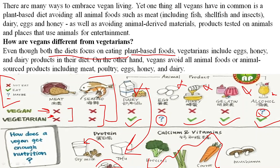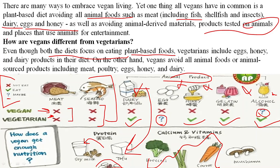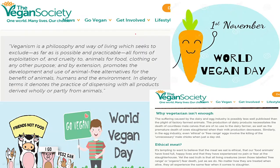One common thing across all vegan philosophies is that vegans avoid any animal food product — fish, shellfish, insects — and also animal-derived materials like dairy, milk, cheese, paneer, eggs, and honey. They even avoid products tested on animals and do not go to places that use animals for entertainment. Essentially, they are against all forms of animal cruelty.